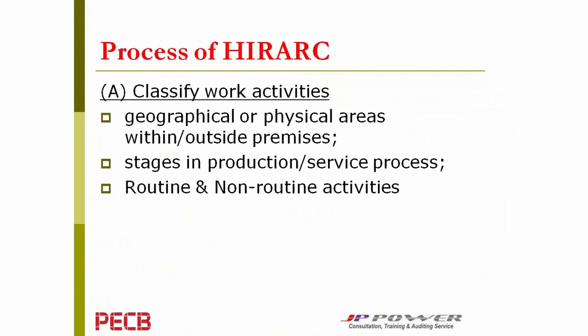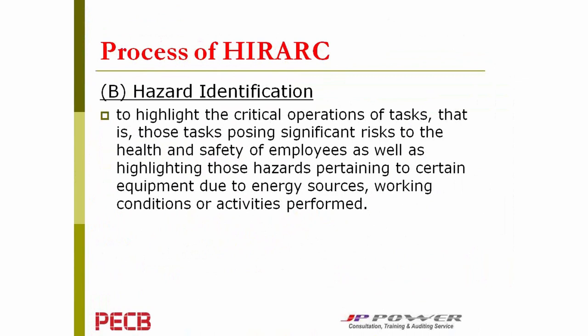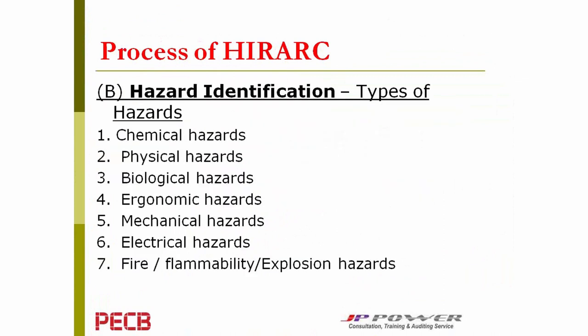Once we have identified these activities, in each activity we need to identify what occupational hazards exist. There are many types of hazards, so before starting hazard identification it is important to understand what types of hazards may exist in the organization. In a simplified form, there are seven types of hazards: chemical, physical, biological, ergonomic, mechanical, electrical, and fire and explosion hazards.